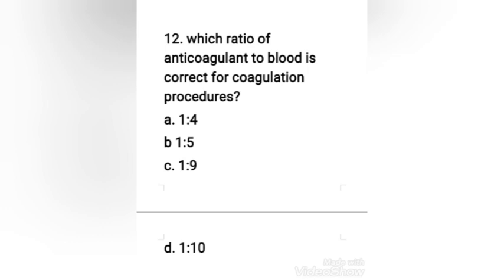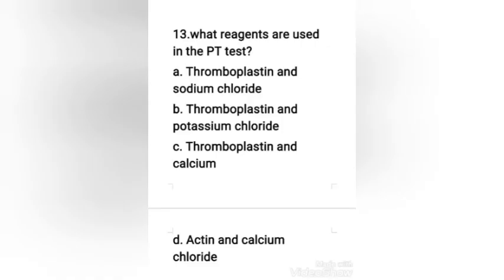Next question: which ratio of anticoagulant to blood is correct for coagulation procedures — 1:4, 1:5, 1:9, or 1:10? The right answer is option C, 1:9. The optimum ratio of anticoagulant to blood is one part anticoagulant to nine parts blood. This amount is sufficient to bind all available calcium, thereby preventing clotting. For coagulation studies, the ratio is 1:9.